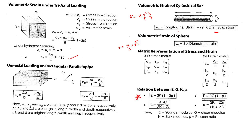Very important relations: E = 2G(1 + μ), E = 3K(1 − 2μ), and E = 9KG/(3K + G). These are the key relationships between elastic constants.